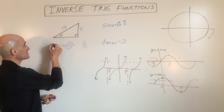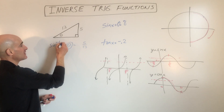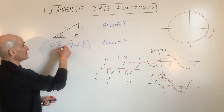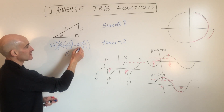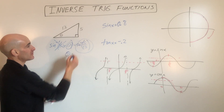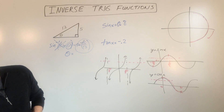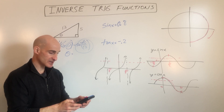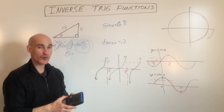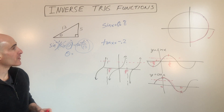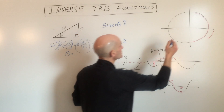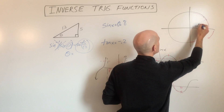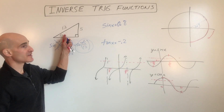We want to get this angle by itself, so we're going to take the sine inverse of both sides of the equation to keep it balanced. These are inverses, so theta equals the sine inverse of 5 thirteenths. Going to the calculator, sine inverse of 5/13 comes out to approximately 0.39 radians. So that angle is right about 0.39 radians.